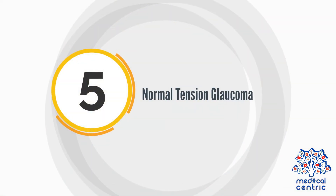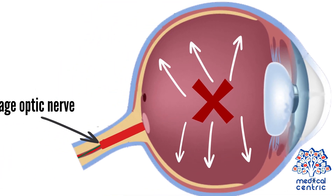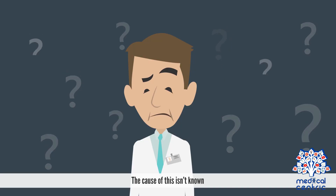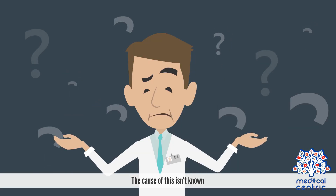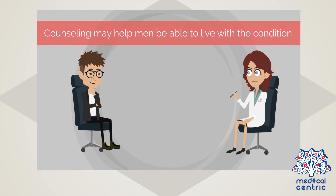Normal tension glaucoma. In some cases, people without increased eye pressure develop damage to their optic nerve. The cause of this isn't known. However, extreme sensitivity or a lack of blood flow to your optic nerve may be a factor in this type of glaucoma.